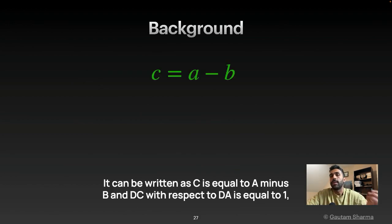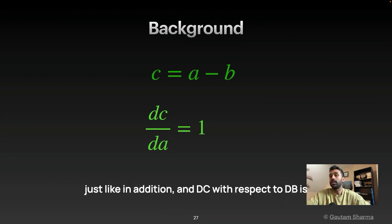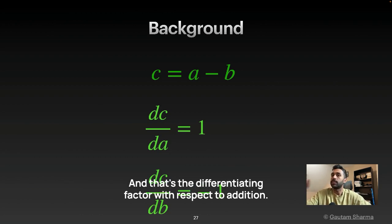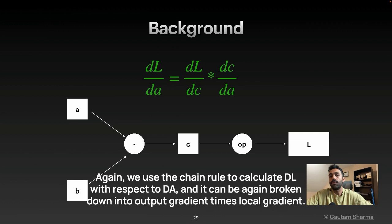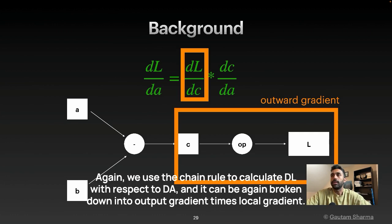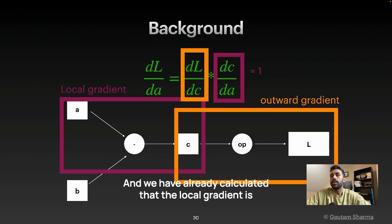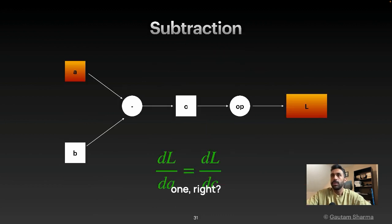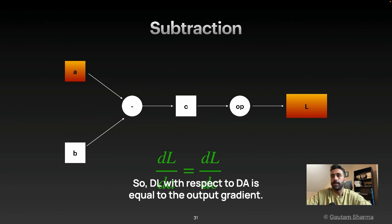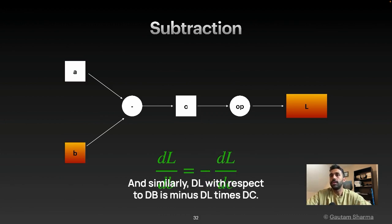So let's talk about subtraction now. It can be written as C is equal to A minus B and DC with respect to DA is equal to 1 just like in addition. And DC with respect to DB is now minus 1. And that's the differentiating factor with respect to addition. So again, we use the chain rule to calculate DL with respect to DA. And it can be again broken down into output gradient times the local gradient. And we have already calculated that the local gradient is 1. So DL with respect to DA is equal to the output gradient. And similarly, DL with respect to DB is minus DL times DC.